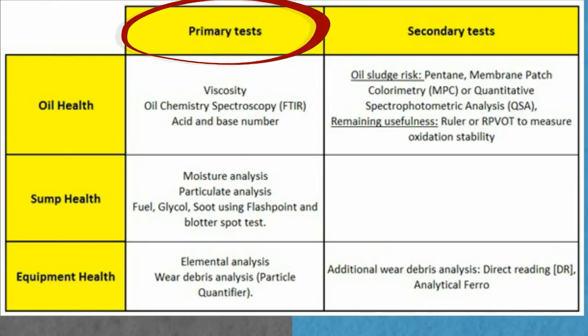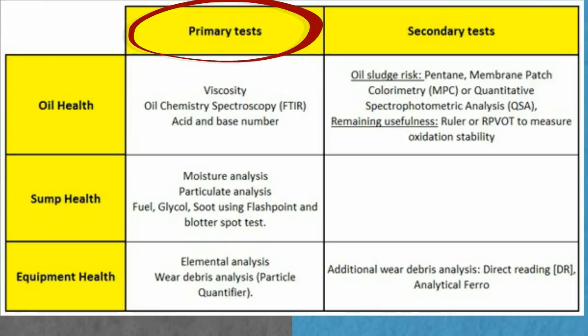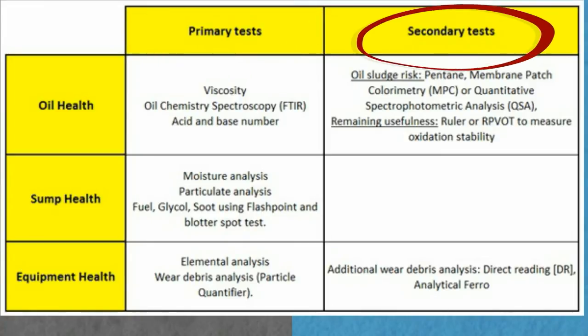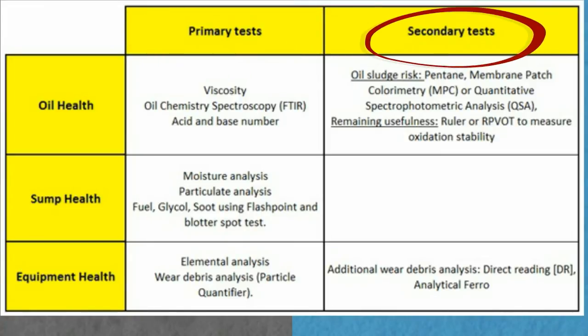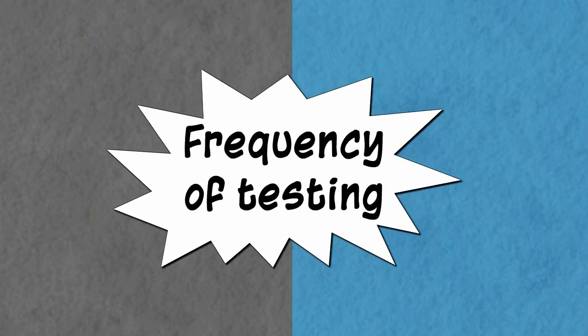The general approach is to identify a small list of primary tests that provide a broad view of health indicators, then define a set of secondary tests that can be triggered based on the results of the primary tests to provide more specific information relative to the situation and type of equipment.